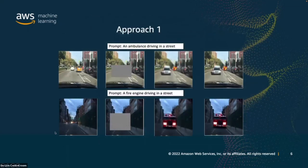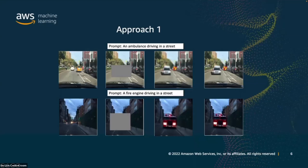The first approach involves masking a portion of the image and using a text-guided diffusion model to generate an emergency vehicle within the masked portion, then sending it to a super-resolution model for higher resolution. For example, using prompts like 'an ambulance driving in the street' or 'a fire engine driving in the street,' the diffusion model generates a vehicle in the masked portion that is correctly blended, and the super-resolution model increases resolution. The right column images are the final images used for downstream modeling.